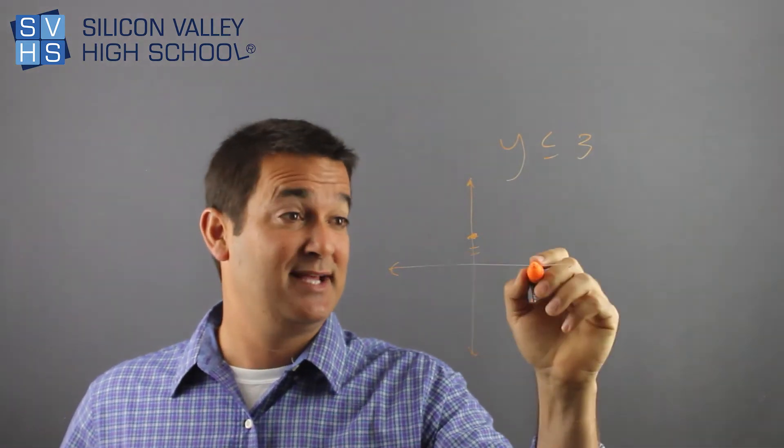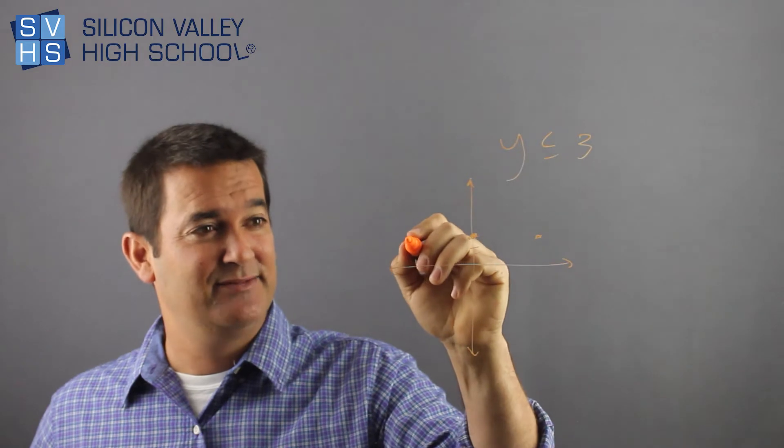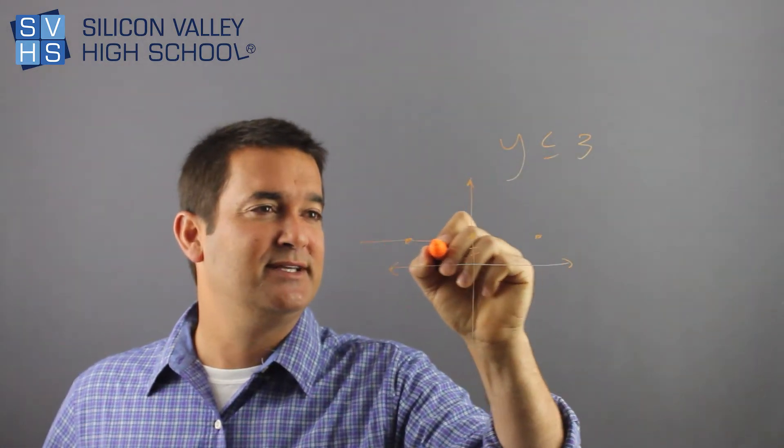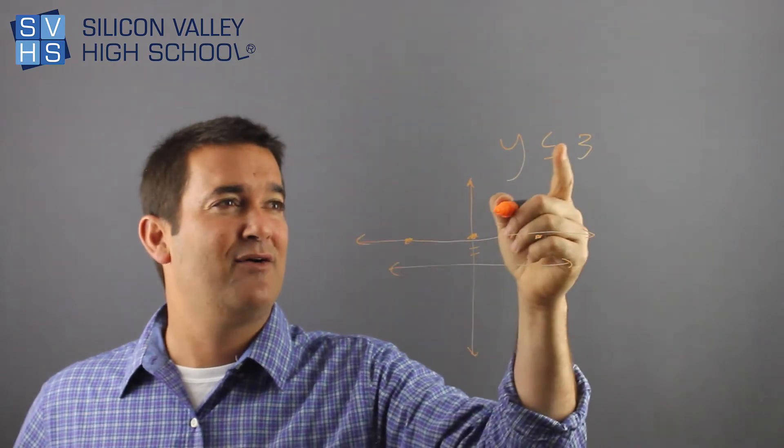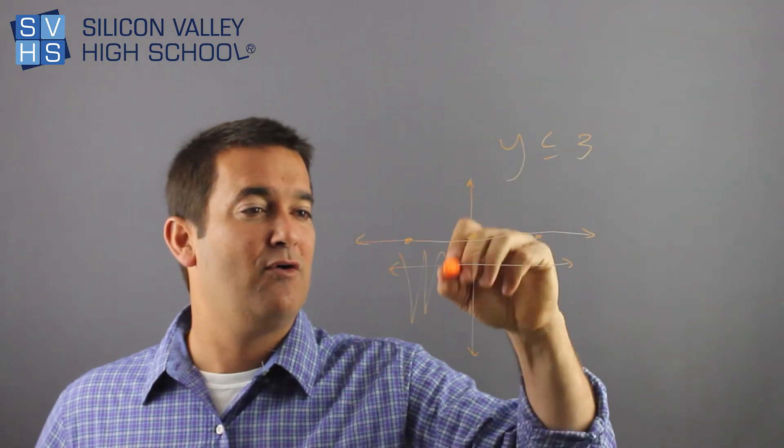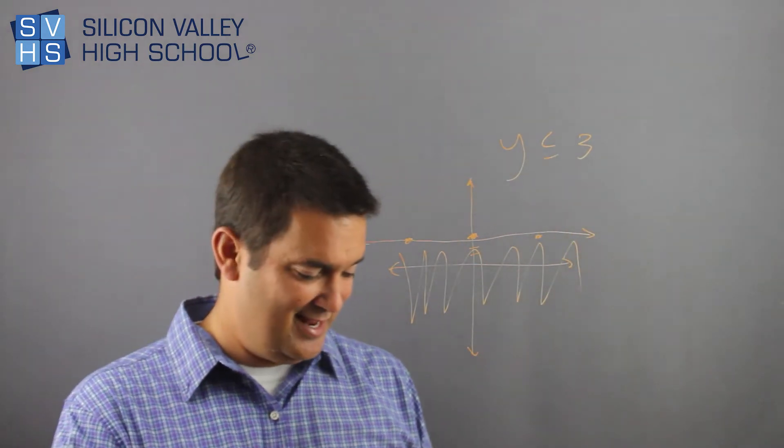Y is always 3. If x is 10, y is 3. If x is negative 10, it's a horizontal line. Solid or dotted? You definitely see that this is solid. You graph it, and now is it less than or greater than? Less than or equal to, so it's all values down here. That's about as weird as you can get.